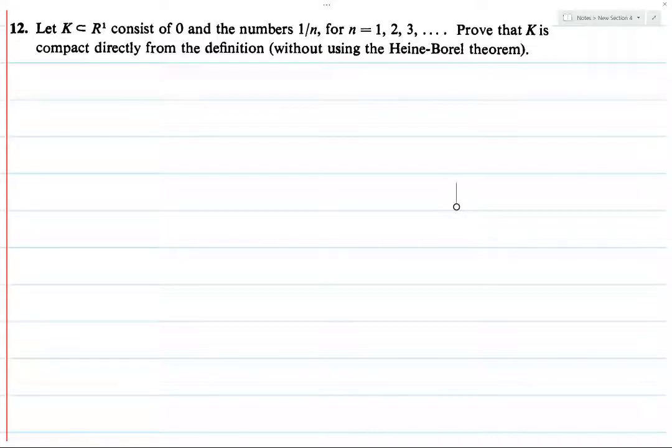We've talked about the set of 1 over n before. All of these numbers, these fractions are getting smaller and smaller, and they converge towards 0. And this set K also contains the point 0.